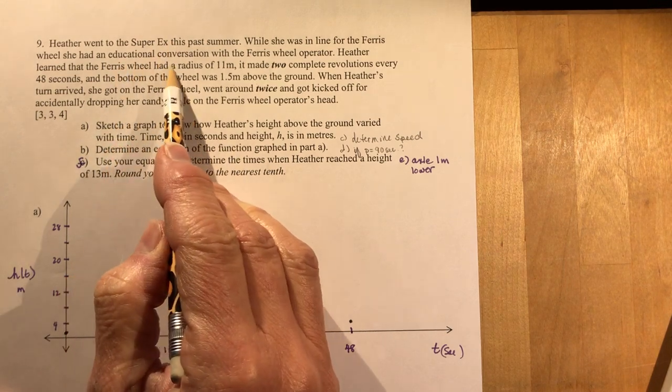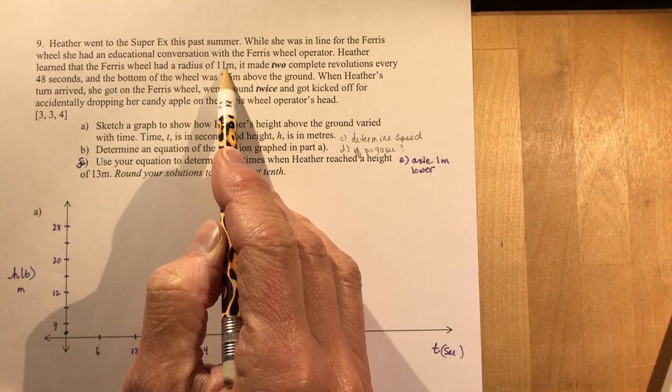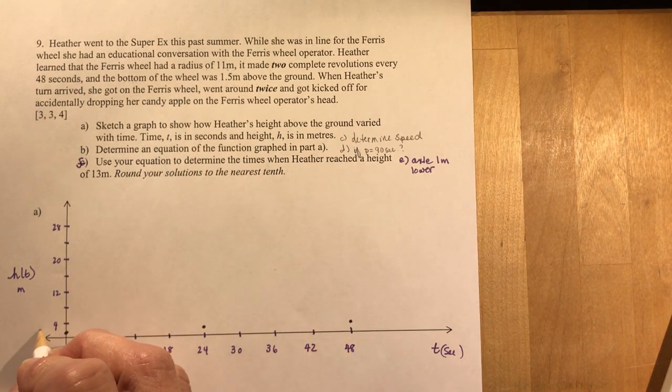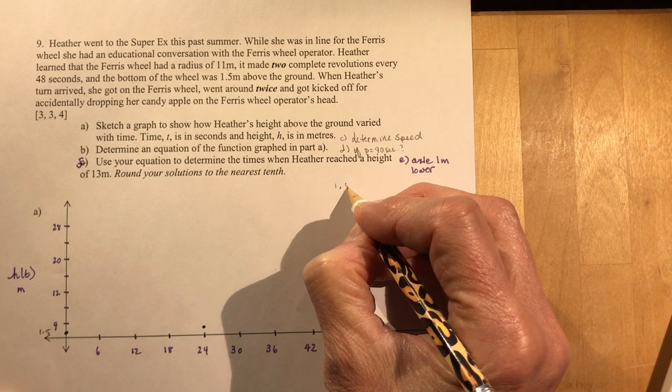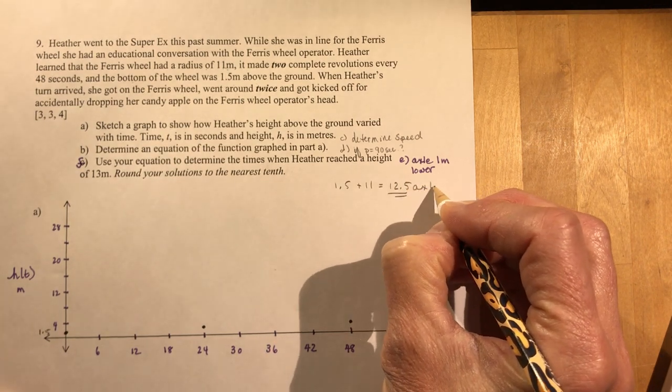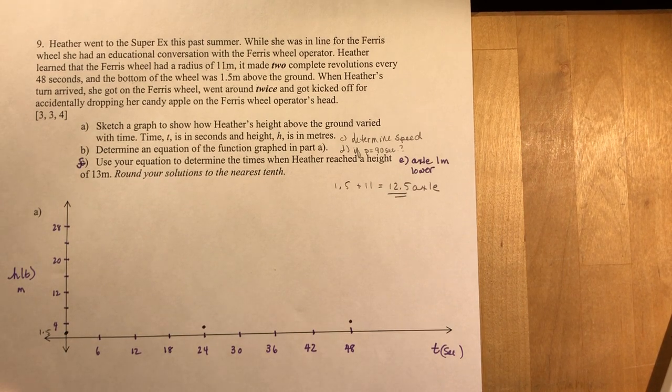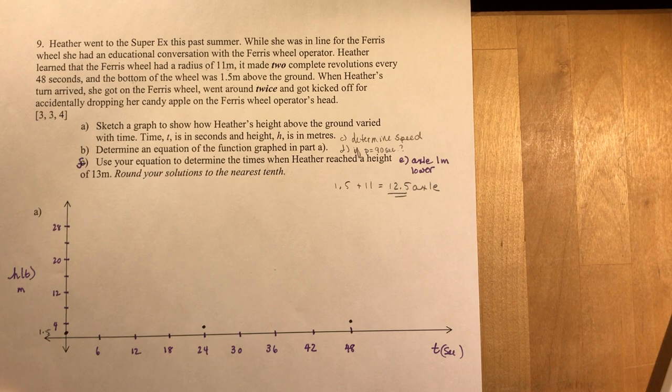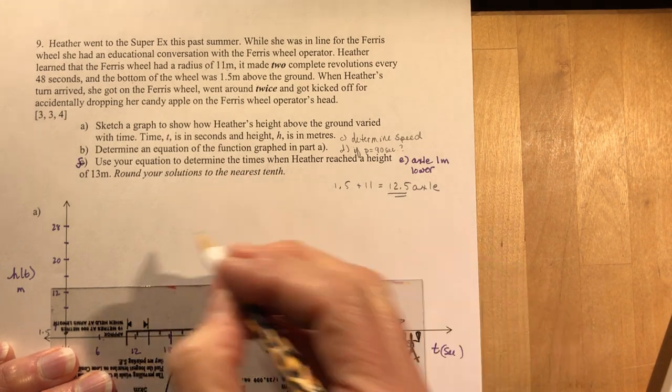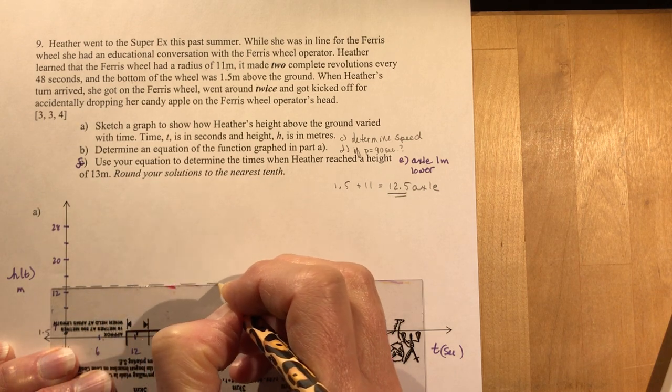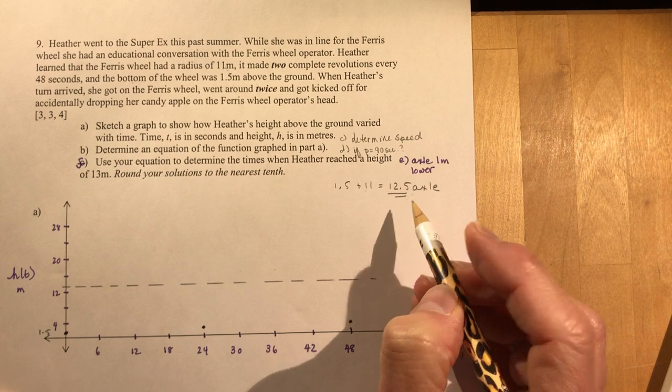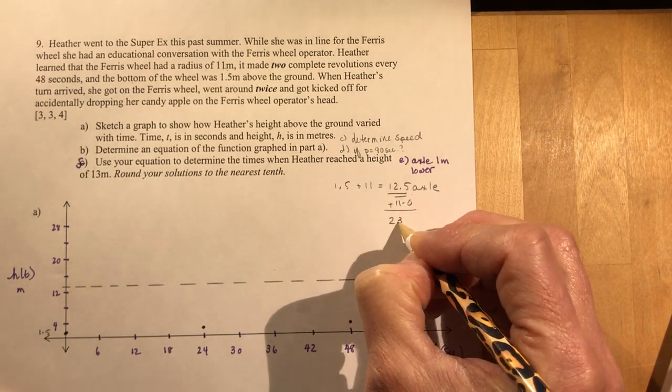If you read through carefully, every 48 seconds for two cycles, she gets on the Ferris wheel when it's 1.5 meters above the ground at the bottom. So 1.5 is going to be here. After 24 seconds, she's back at 1.5 meters. At 48 seconds, she's back to 1.5. Now it says that the Ferris wheel has a radius of 11. Now radius is your amplitude. That's not the diameter of the wheel. It's the radius of the wheel. So this is 1.5. So we're doing 1.5 plus 11. That's going to tell us where the axis is, or the axle of the Ferris wheel. So the axle of the Ferris wheel is going to be at 12.5 meters.